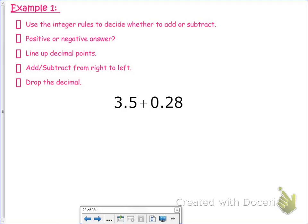Referring back to that video, when we're adding, the signs are the same. We have a positive 3.5 and a positive 0.28. So that means we are going to be adding, and because they are both positive, we're going to add and keep the sign that they have.